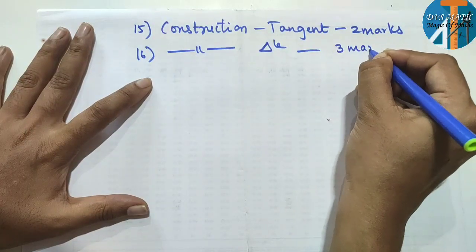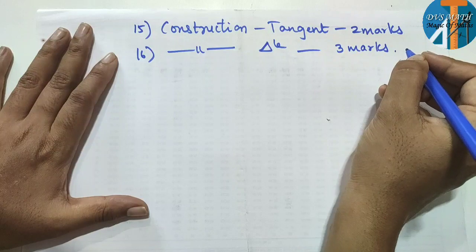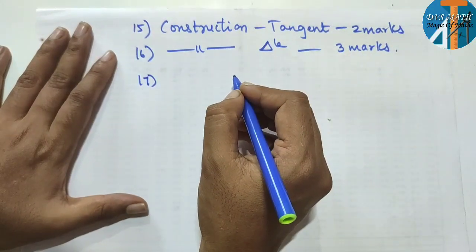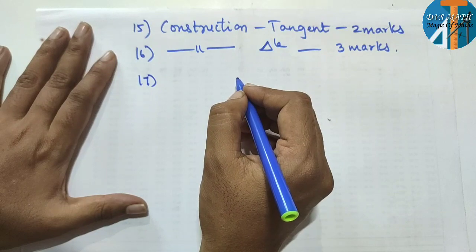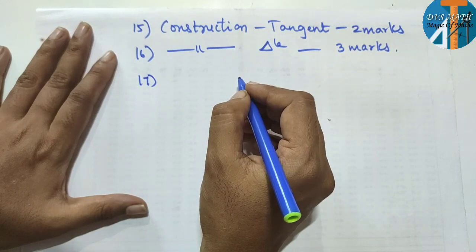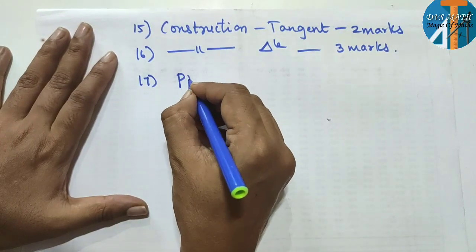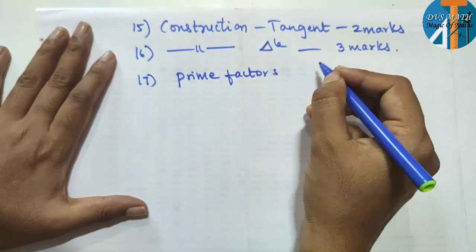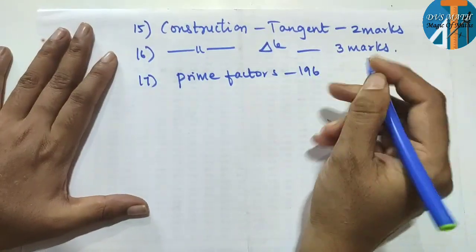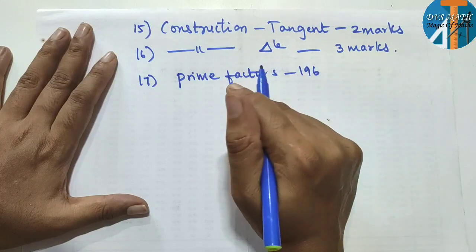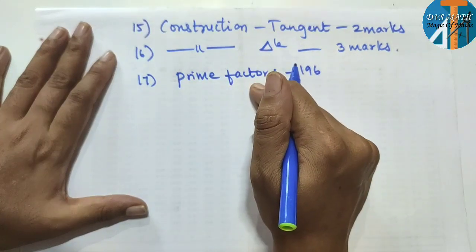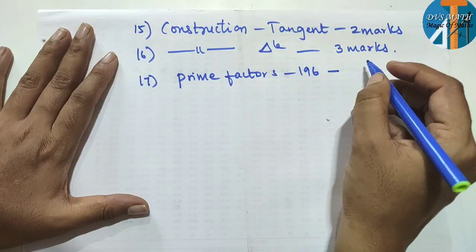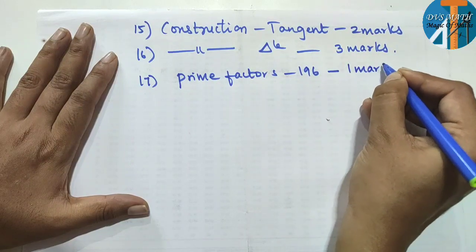Question number 17: one number is given — find its prime factors. For example, 196 is given; express 196 in terms of prime factors. This is straightforward — you will get one mark easily.